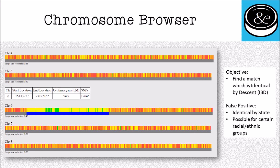For false positives — where they come from — they're very common, especially for people who descend from certain racial or ethnic groups. Racial and ethnic groups, especially those of African or Jewish descent, have certain genetic material that repeats in their populations. Because their populations are relatively small, it's very hard to tell whether that indicates a biological relationship or simply their ethnic heritage. When someone is a match to you because of their racial or ethnic group and not because of a biological relationship, that is called being identical by state, or IBS. As you compare notes with this person, you're not going to be able to find any sort of biological relationship.